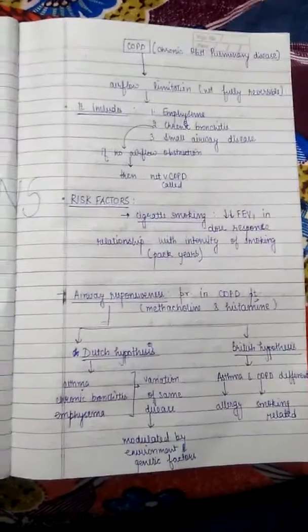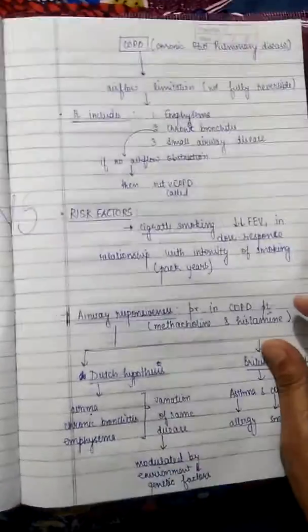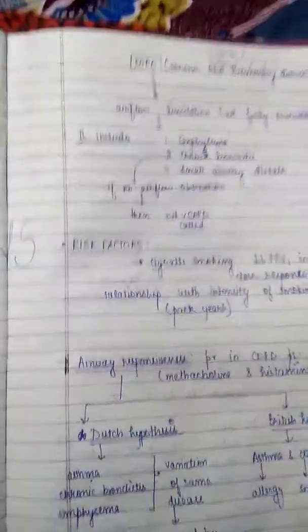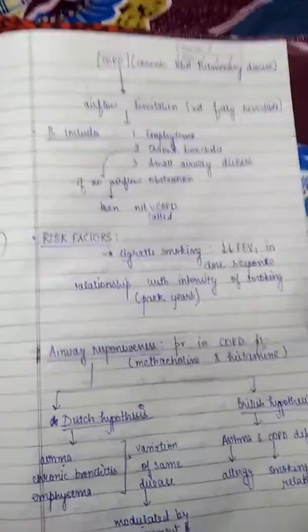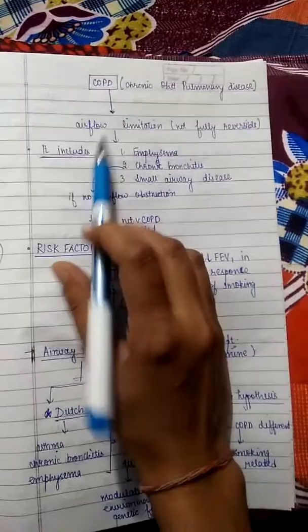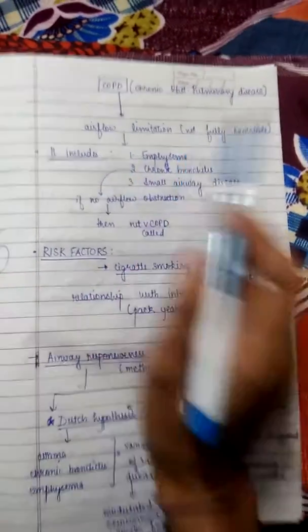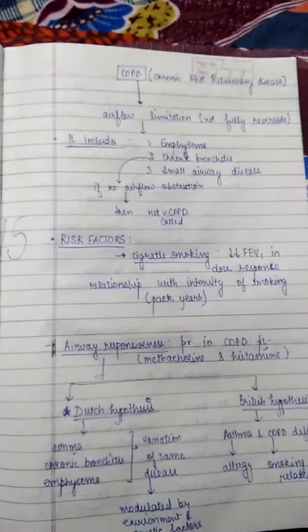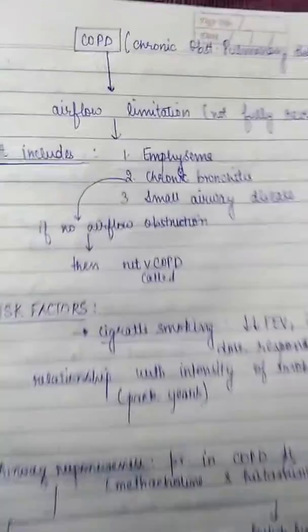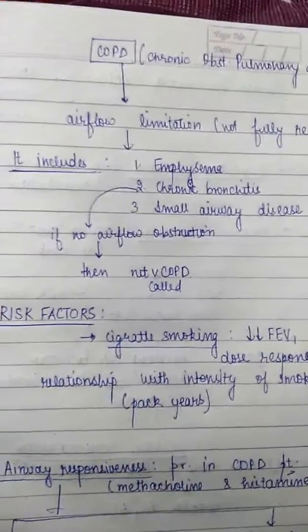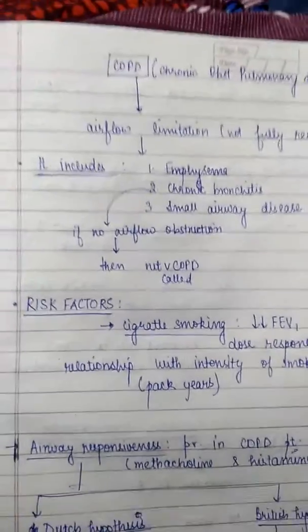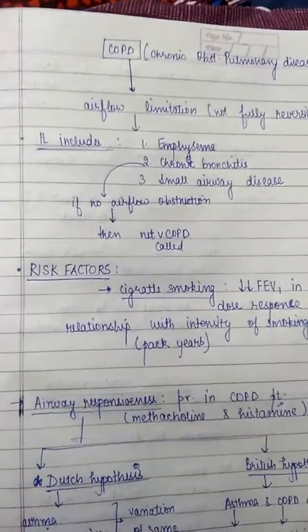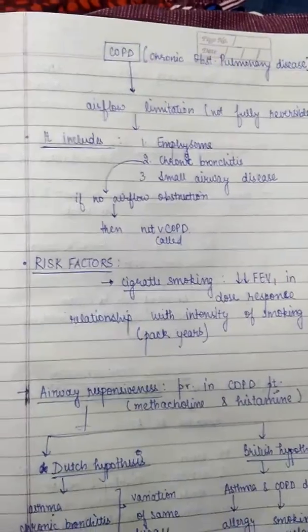Beginning with chronic obstructive pulmonary disease: COPD is defined as airflow limitation that is not fully reversible. It includes emphysema, chronic bronchitis, and small airway disease. Remember, in chronic bronchitis, if no airflow obstruction occurs, then it is not called COPD.